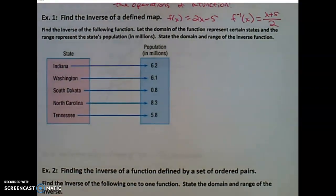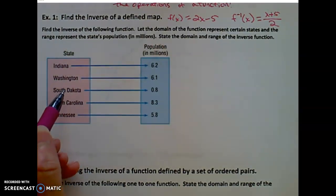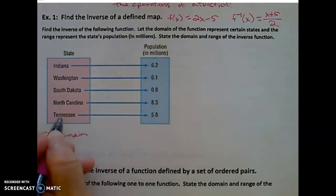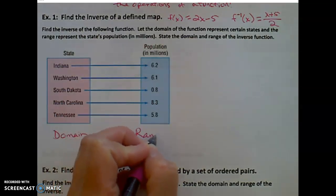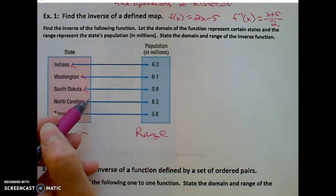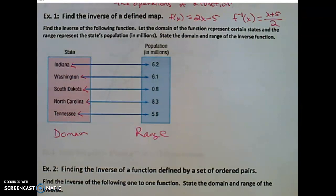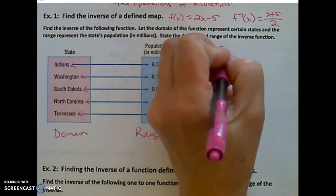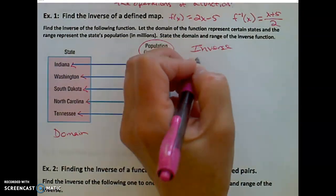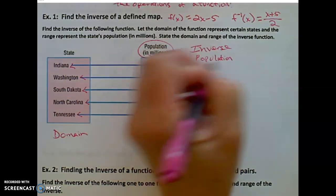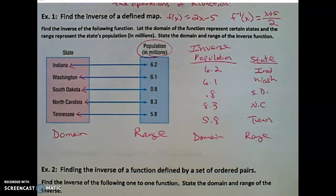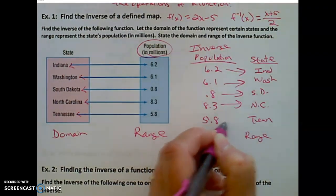We'll refresh our memory on some notations and things. Find the inverse of this mapping. Let's say that this function — these are the elements of the domain. Each one of those elements in the domain is mapped to one element of the range. This is a one-to-one function because it's true in both directions. Each x has only one y, and each y has only one x. Let's map the inverse of that function. Notice the domain for the inverse is the range of the original function — so this will be a population for my inputs. We'll map to a state, and then this domain becomes the range of the inverse. The inverse reverses the operations of the original function.